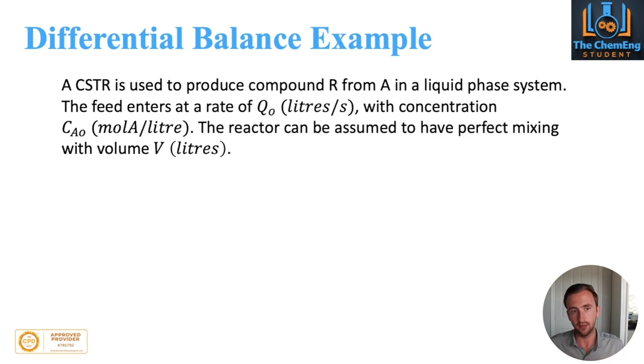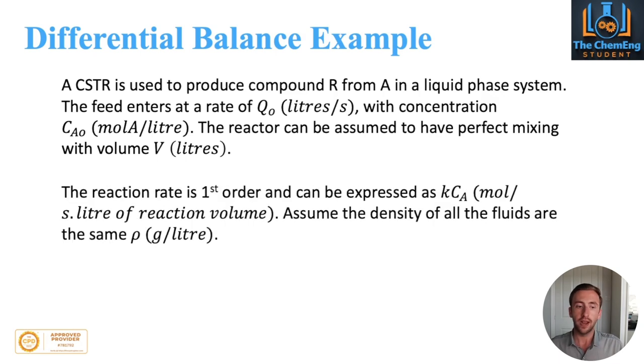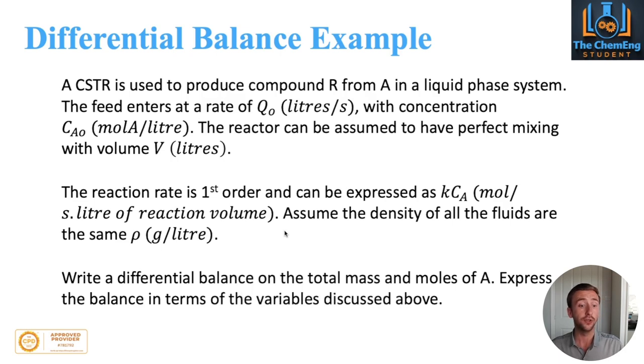Let's take a look at a case study on how you would actually go about implementing the differential balance. We have here: a CSTR is used to produce compound R from A in a liquid phase system. The feed enters at a rate of Q₀ liters per second with concentration C_A₀ moles of A per liter. The reactor can be assumed to have perfect mixing with volume V liters. The reaction rate is first order and can be expressed as kC_A moles per second liter of reaction volume. We can assume the density of all fluids are the same and constant throughout.